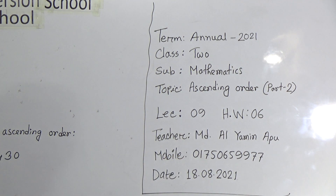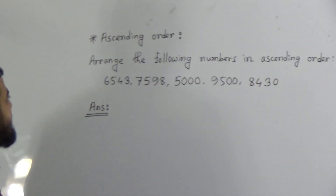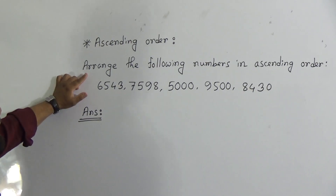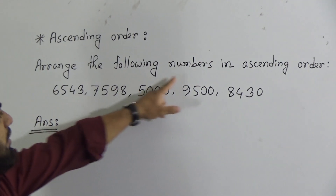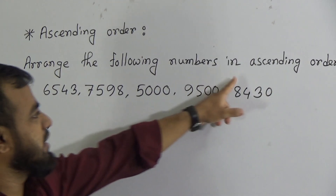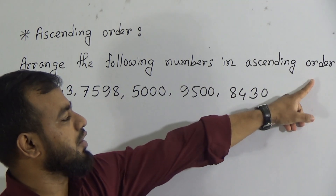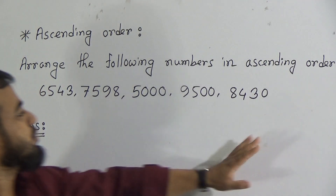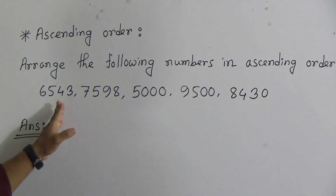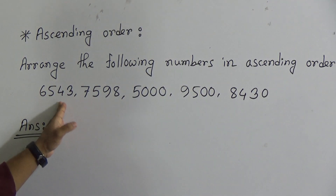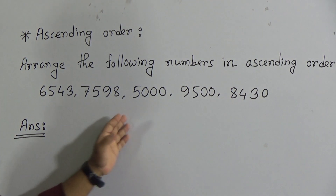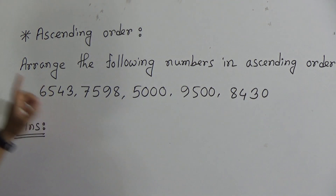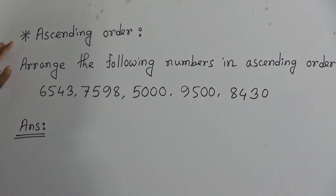So many students, look at the question. The question is: arrange the following numbers in ascending order. There are 5 numbers given — 1, 2, 3, 4, 5 — these 5 numbers need to be arranged in ascending order.